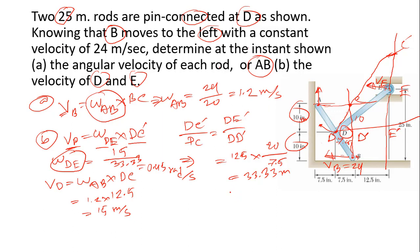We apply another relation: C prime E prime divided by CD prime equals DE prime divided by DD prime. So C prime E prime equals CD prime (which is 10) times DE prime (20) divided by DD prime (7.5), giving us 26.67 meters.